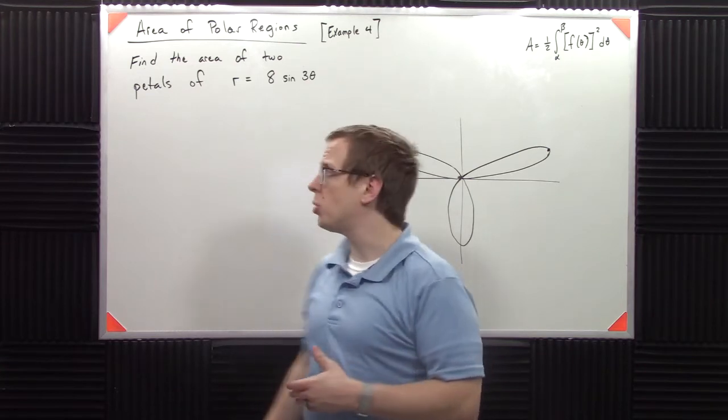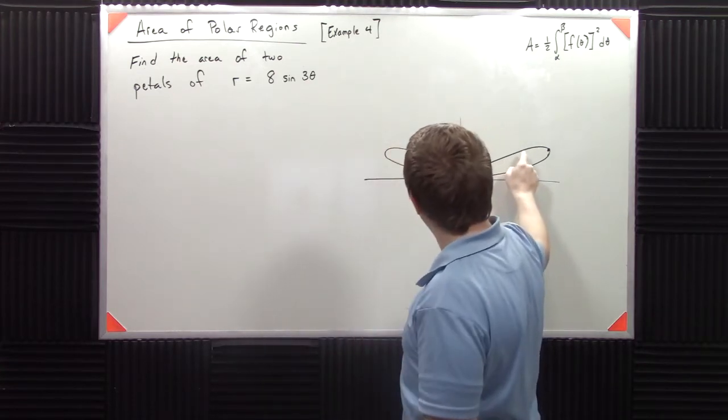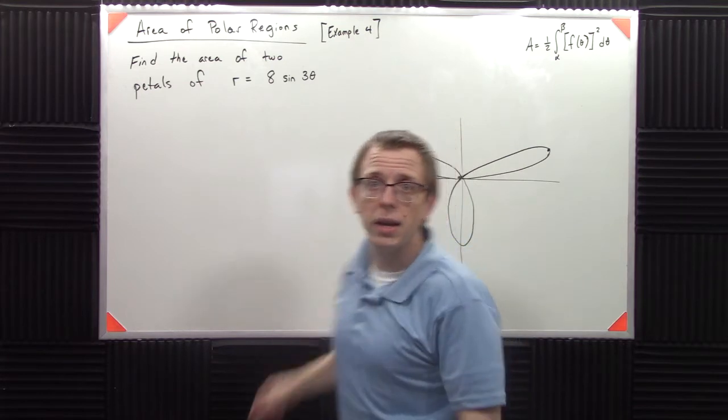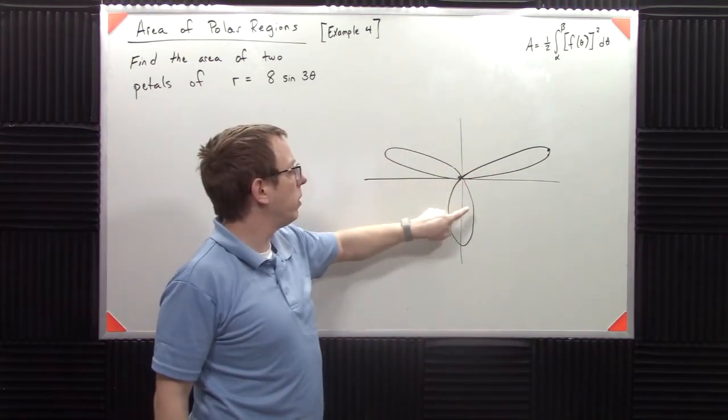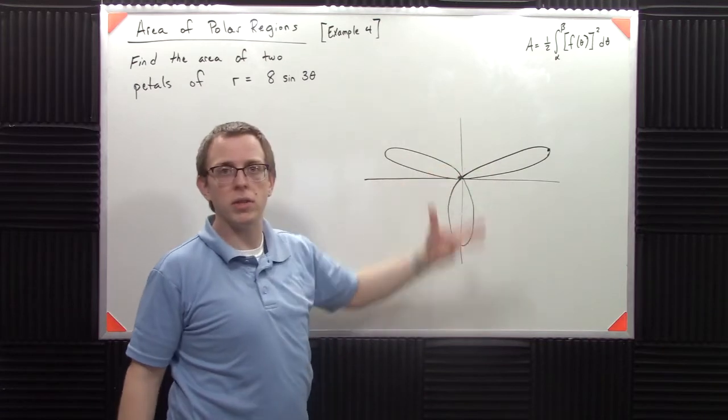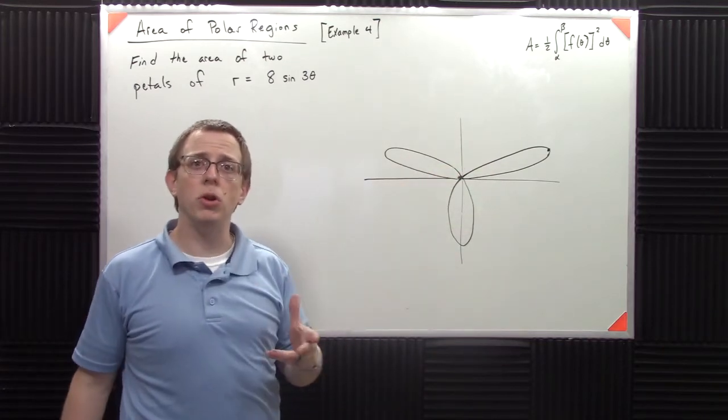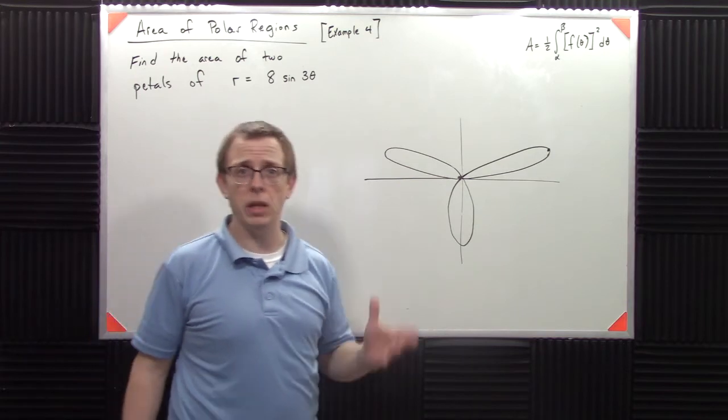And what we're trying to do is we're trying to find the area of two petals. So I could either take this one, I could take, well let me get out of the way. I can take this one and that one. I could take this one and that one. I could take that one and this one, right? Obviously any way I want. And what we're going to do is we're just going to pick whatever's convenient and then go from there.